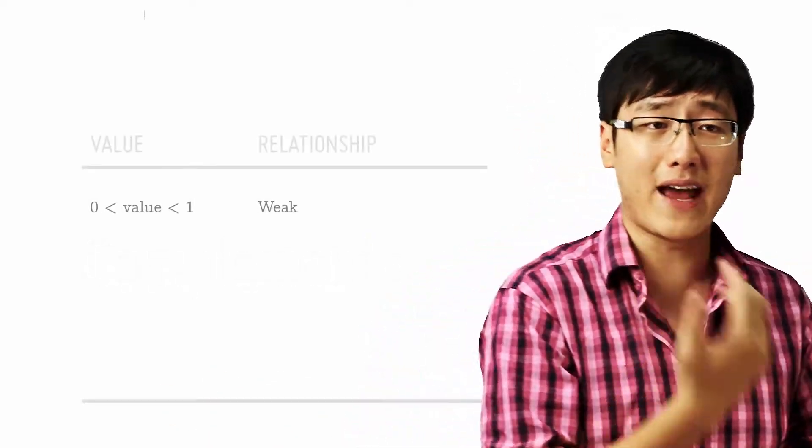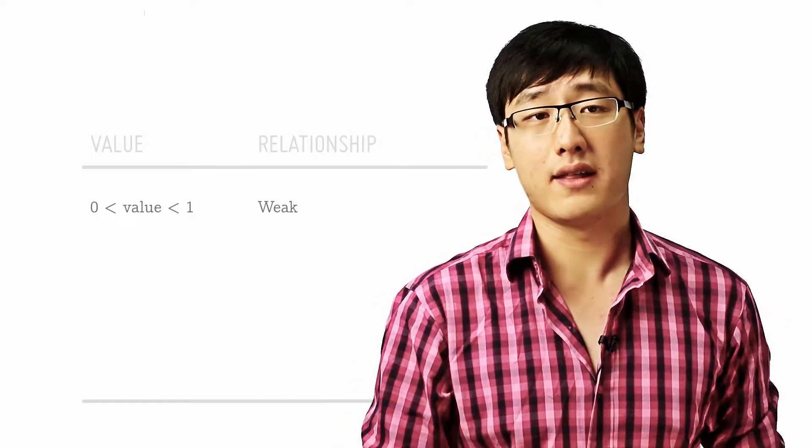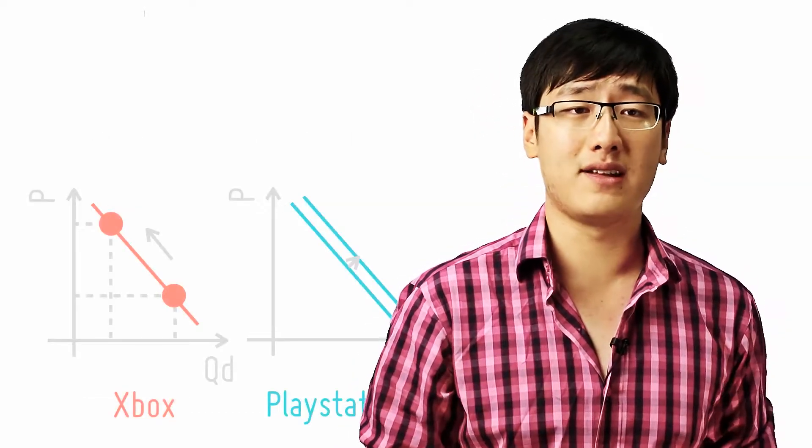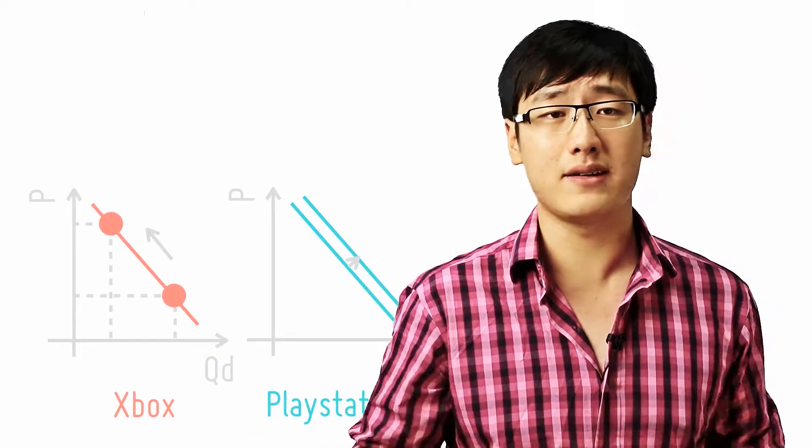So now let's look at the value of XED. If the value is between 0 and 1, it means that the relationship is weak. For example, in the case of a substitute, let's look at a familiar example, Xbox and PlayStations.